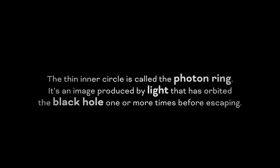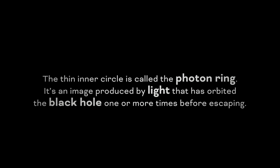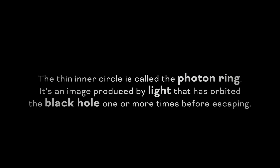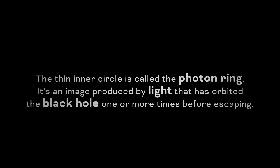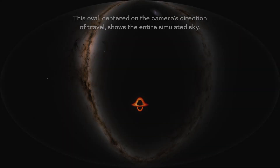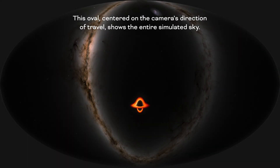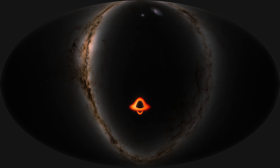So what's happening here? This is a simulation of a flight into a supermassive black hole surrounded by a hot, glowing disk of gas. The thin circle is called the photon ring — it's an image produced by light that has orbited the black hole one or more times before escaping. This oval, centered on the camera's direction of travel, shows the entire simulated sky.